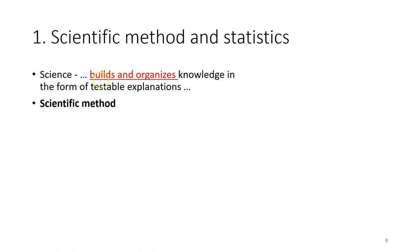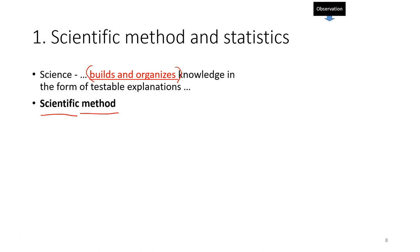Science is an enterprise where we build and organize knowledge. To do that, we use a method called the scientific method — the method used to build and organize knowledge in science. The scientific method is quite common in our daily life. It usually starts with observations.